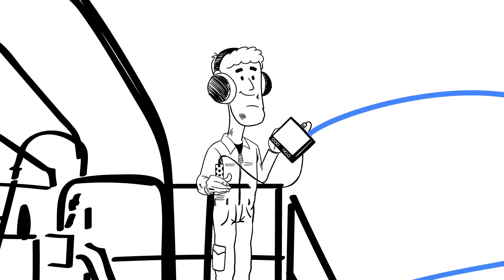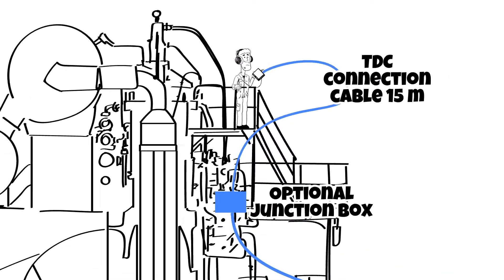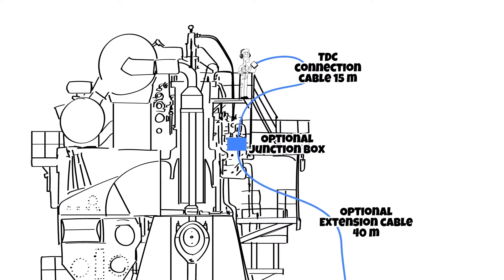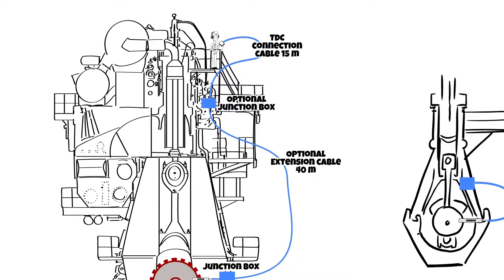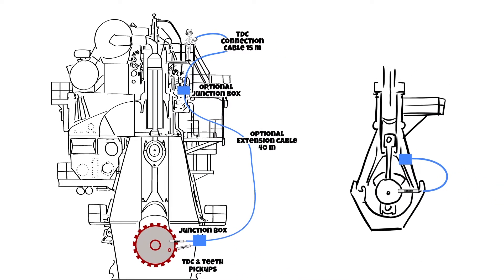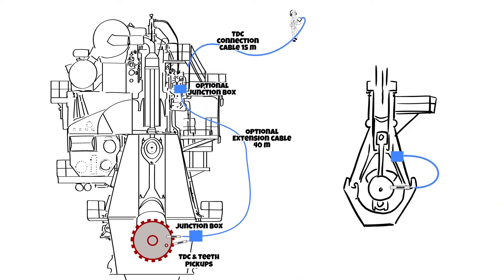Once the measurement on one engine has been finished, disconnect the 15 meter extension cable from the junction box and connect it with the junction box from the next engine to be measured. The junction boxes and the sensors remain permanently at the engine.